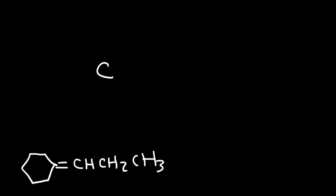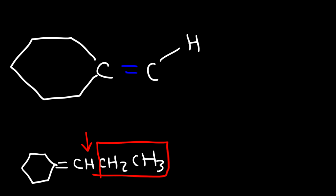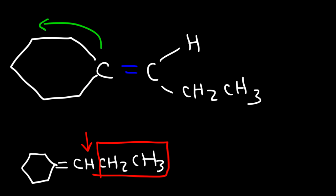Let's focus on the C=C bond. On the left side, that carbon is part of the cyclohexane ring. On the right side, this carbon atom is bonded to a hydrogen and an ethyl group. There are no cis/trans or E and Z isomers in this example, because for the carbon on the left, the top is the same as the bottom. So in this case we only get one product.